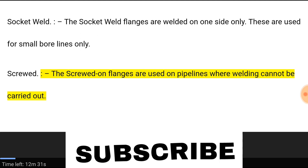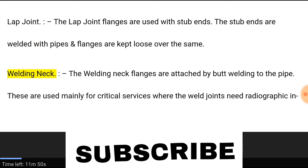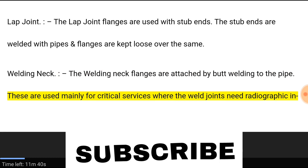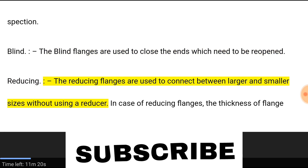Screwed flanges are used on pipelines where welding cannot be carried out. Lap joint flanges are used with stub ends; the stub ends are welded with pipes and flanges are kept loose over the same. Welding neck flanges are attached by butt welding to the pipe and are used mainly for critical services where the weld joints need radiographic inspection.